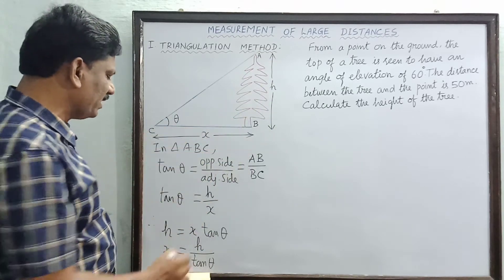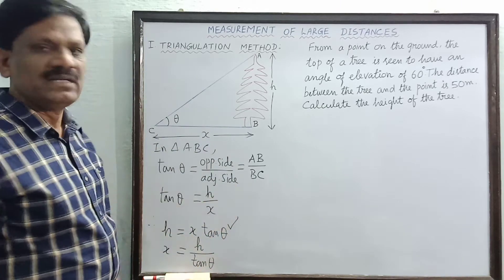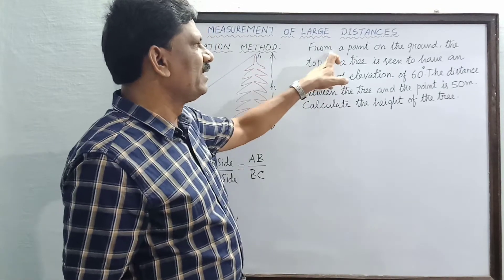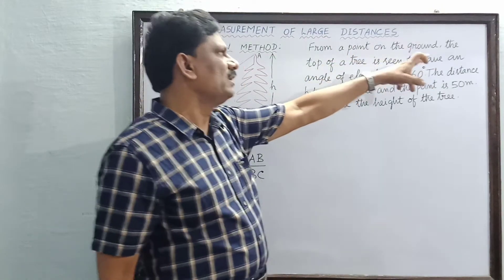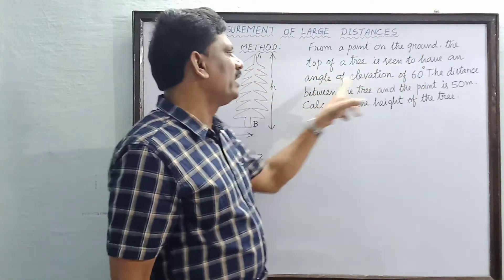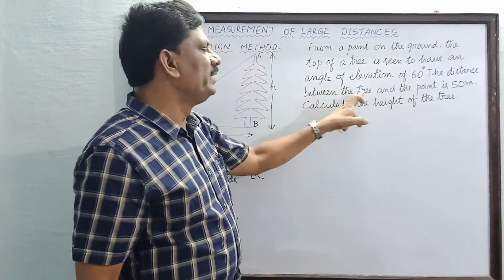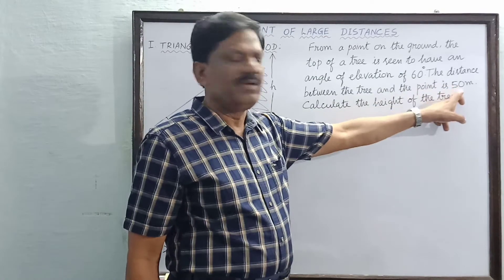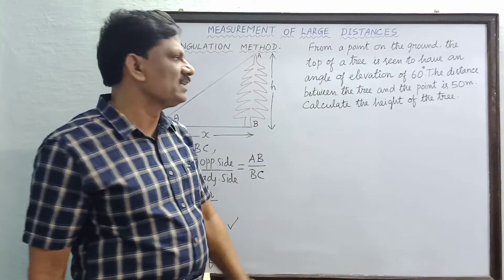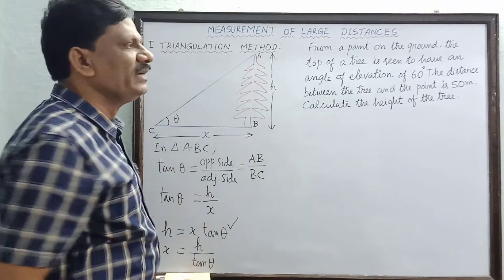An example is given in our textbook. From a point on the ground such as C, the top of a tree is seen to have an angle of elevation theta equal to 60 degrees. The distance between the tree and the point is 50 meters, so this distance x is given as 50 meters. Calculate the height of the tree.